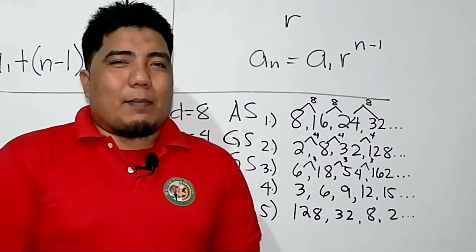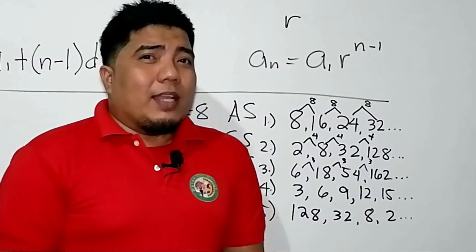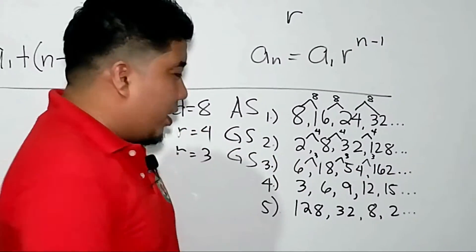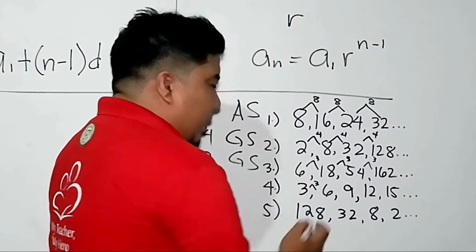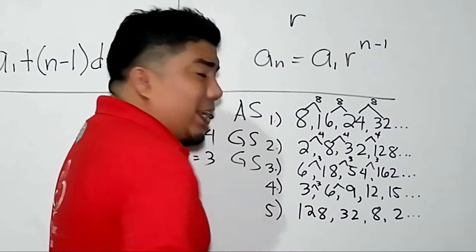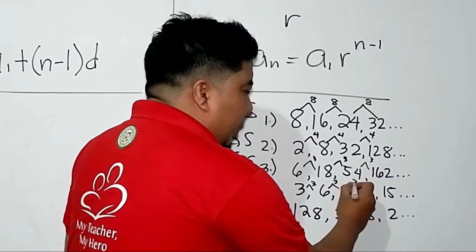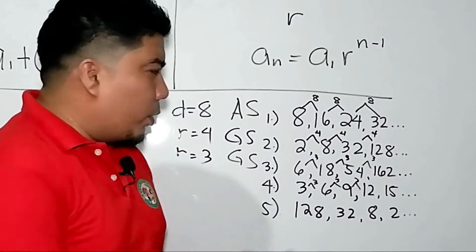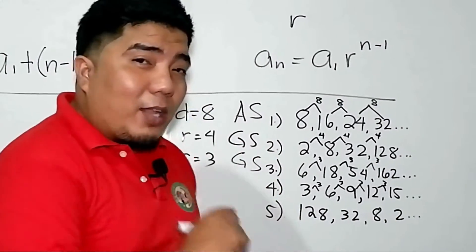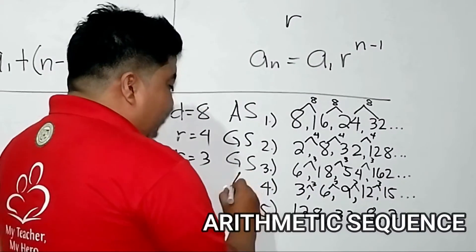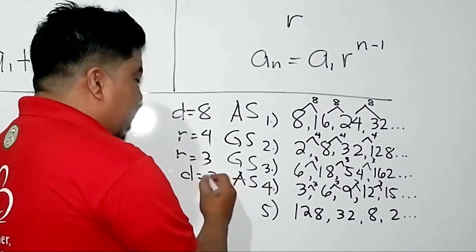We are now on our fourth example: 3, 6, 9, 12, and 15. Starting with arithmetic: the difference between 3 and 6 is positive 3; between 6 and 9 is still positive 3; between 9 and 12 is positive 3; and between 12 and 15 is still positive 3. Since they have a common difference, the whole sequence is an arithmetic sequence, and the common difference is positive 3.